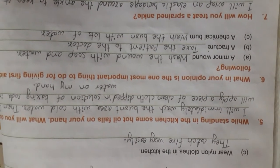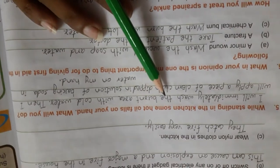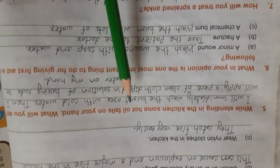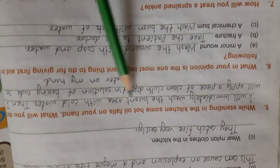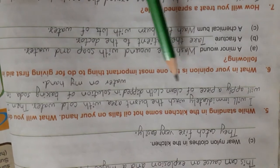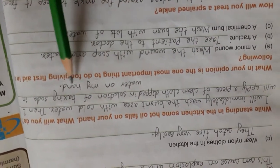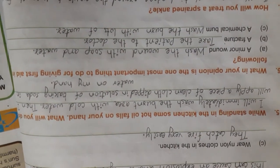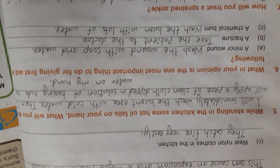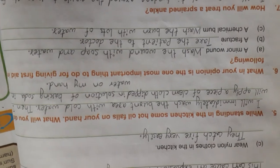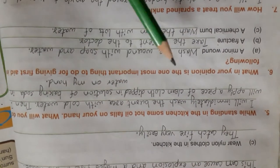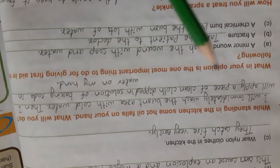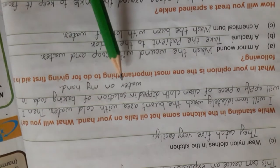Question number 5. While standing in the kitchen, some hot oil falls on your hand. What will you do? First of all, I will immediately wash the burnt area with cold water. Then I will apply a piece of clean cloth dipped in solution of baking soda in water on my hand.